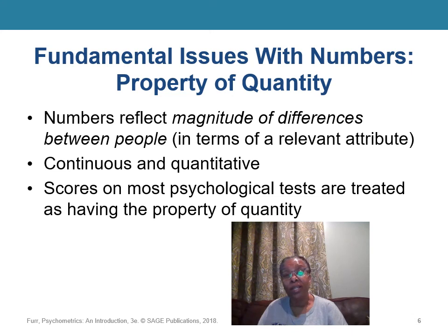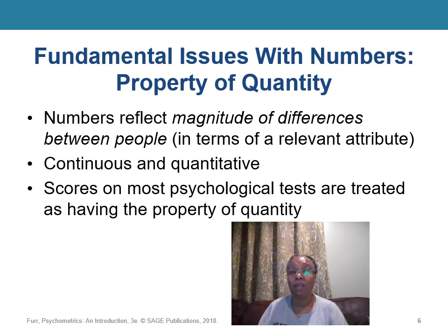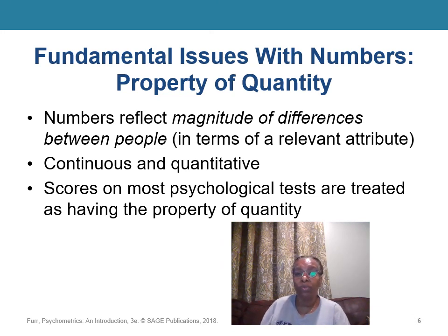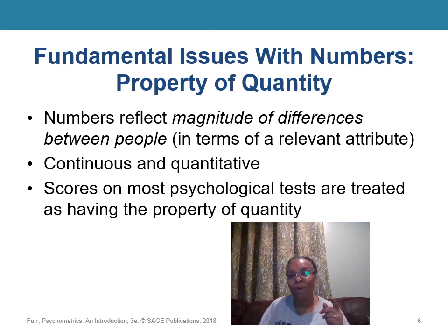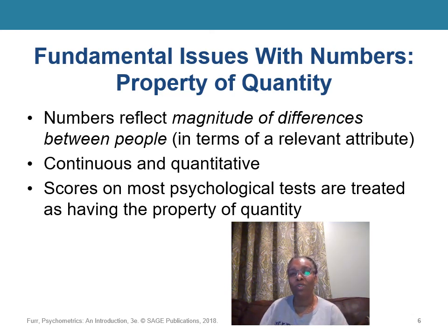When assessing an attribute correctly, real numbers are indicative of the amount of that behavior. We use psychological tests to measure psychological attributes, and often we assume that test scores will have the property of quantity — but we need to understand that this is not always a reasonable assumption.